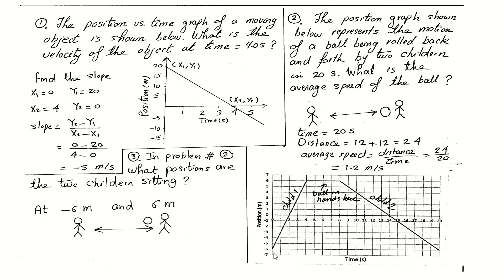On this graph, the y-axis shows position and the x-axis shows time. The first child is at negative six and the second child is at positive six. The first child throws the ball to the second child, who holds it for a few seconds, then throws it back to the first child at negative six.